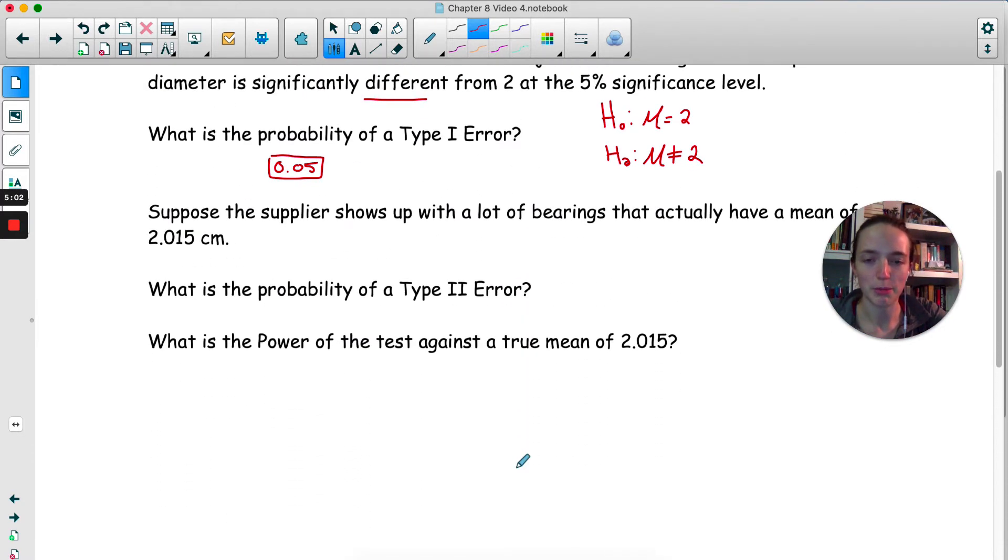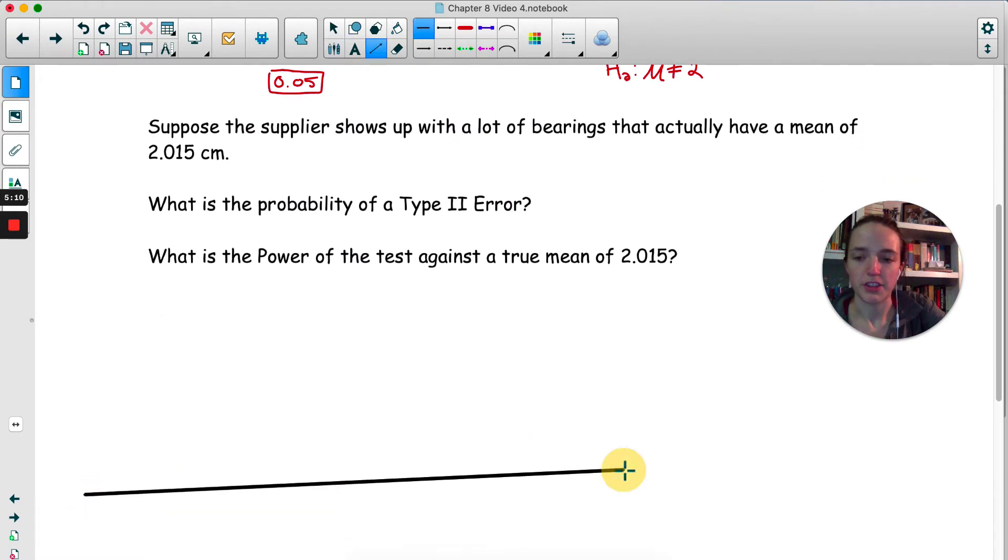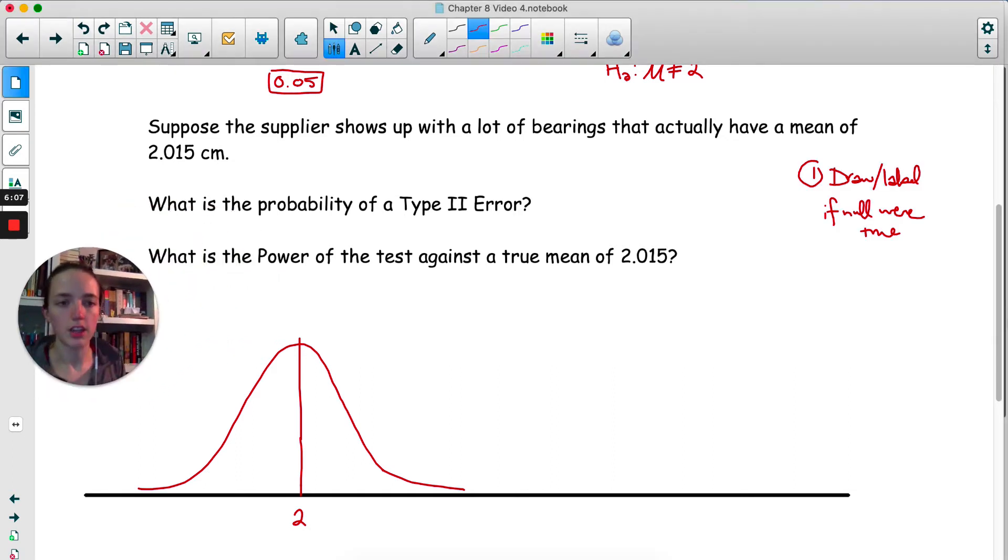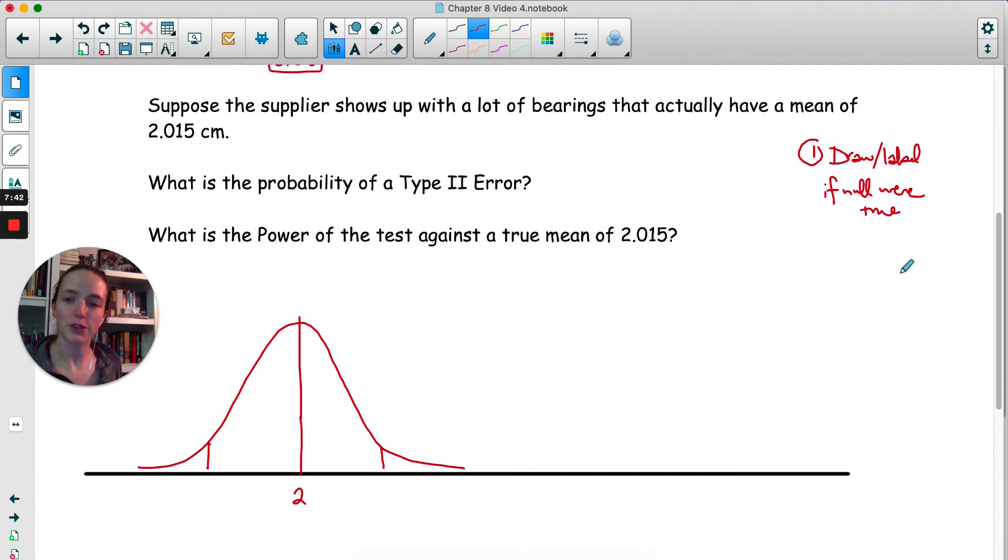So there's a lot of room on your paper. I'm going to start with a straight line and then a normal distribution. We're going to start out drawing the distribution if the null were actually true. So if the null were true, then the mean of our sampling distribution would be 2. We're going to draw and label if the null were true. What we want to label are these two spots, the places where we would start rejecting the null. We basically want to label our cutoffs.